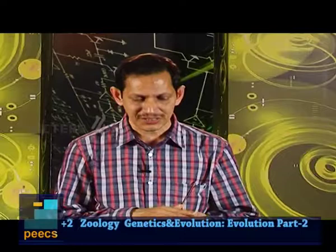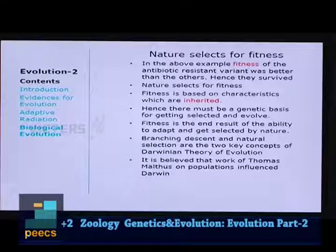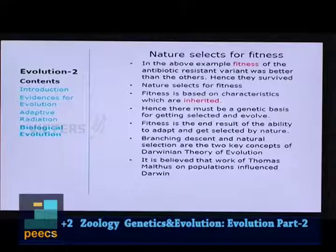Branching descent and natural selection are the two key concepts of Darwinian theory of evolution. As seen in the bacteria example, one bacterium gives rise to two — one resistant to antibiotics and one non-resistant. This branching is a key concept. Additionally, one of the branches has to be selected by nature — that is natural selection.